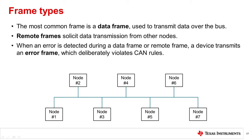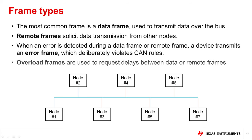The last type of frame is an overload frame. This frame is similar to an error frame, but it is sent between frames or during inter-frame spacing rather than during a frame. It is transmitted by a node that becomes too busy, providing extra delay between messages by ensuring that the bus is held up until the overload condition is cleared.